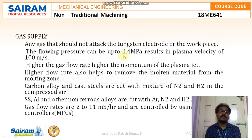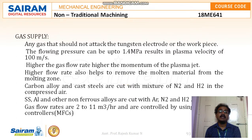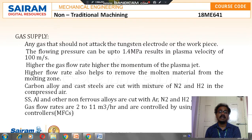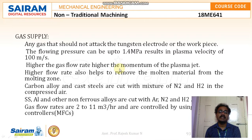For gas supply, any gas used should not attack the tungsten electrode or the workpiece. Flowing pressure can be up to 1.4 MPa, resulting in a plasma velocity of 100 meters per second. Higher gas flow rate gives higher momentum of the plasma jet, and also helps to remove molten material from the melting zone. Carbon alloy and cast steels are cut with a mixture of nitrogen and hydrogen in compressed air, while steel, aluminium, and non-ferrous alloys are cut with argon-nitrogen-hydrogen gases. Gas flow rates are 2 to 11 cubic meters per hour, controlled by mass flow controllers.